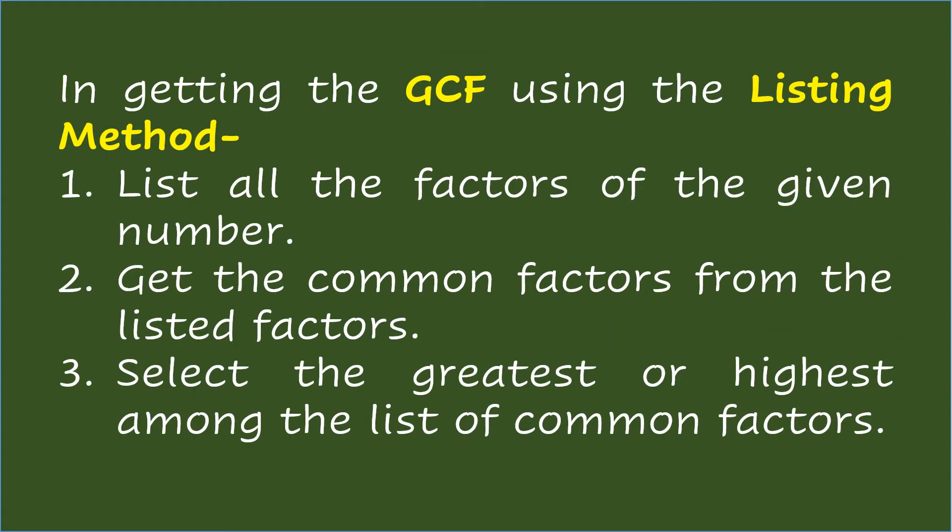In getting the GCF using the listing method: list all the factors of the given numbers, get the common factors from the listed factors, then select the greatest or highest among the common factors.